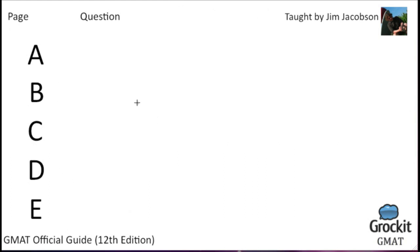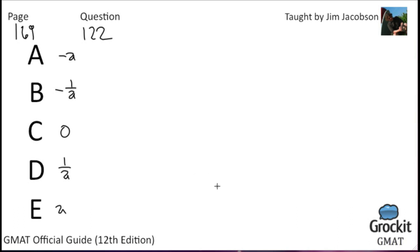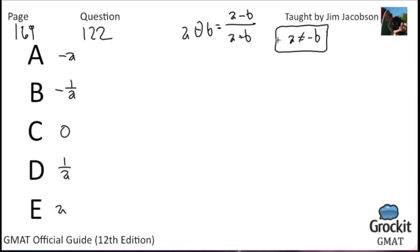Moving on — page 169, number 122. Answer choices: the opposite of A, the opposite of 1 over A, 0, 1 over A, and A. An operation theta is defined by A theta B equals A minus B over A plus B, for all numbers A and B such that A does not equal the opposite of B. The condition that A doesn't equal the opposite of B is just protecting against dividing by zero. We're asked about A theta C.